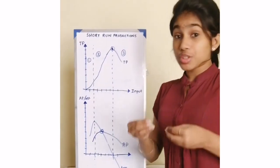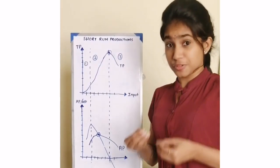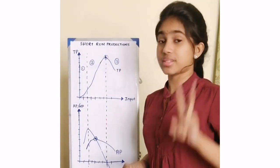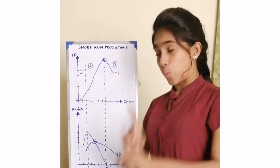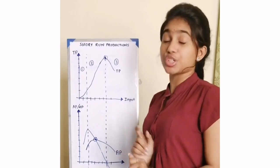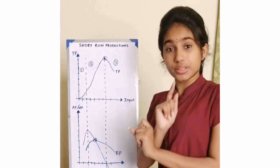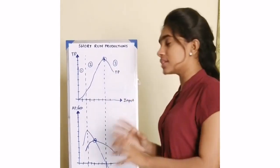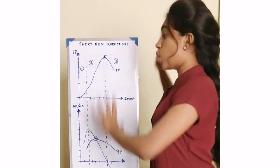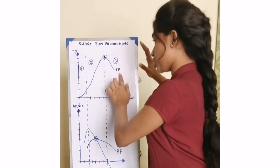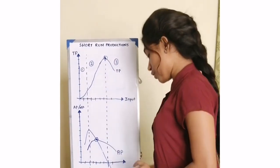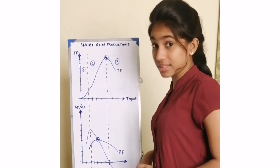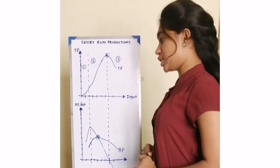Regarding short-term production firms, the most repeatedly asked questions are two. The first is the short-term relationship between short-term productions. For this question, the answer must have a graph of the total product and a graph of MP and AP — the marginal product and the average product.